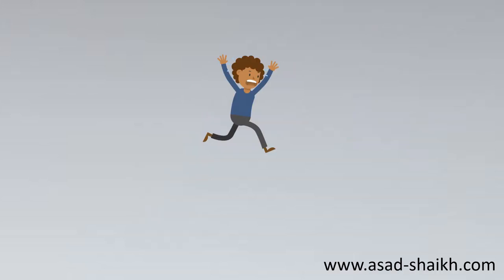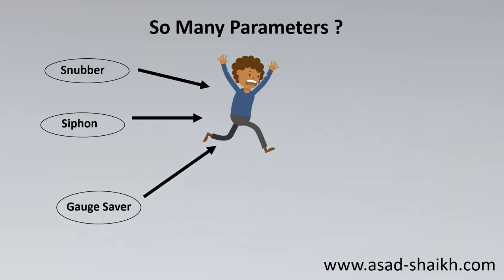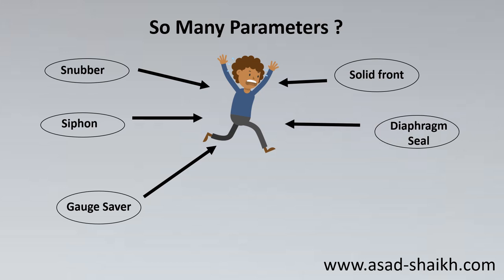When I started with pressure gauges, I realized there are so many parameters to look into. From one side came the snubber, from the other came questions about when to use a siphon — pigtail siphon — and the many different types of siphons available. Then came something called a coiling element, different from a siphon, and then a gate saver — when to use it, when not to. Then came solid front pressure gauges, diaphragm seals, flushing rings, flushing flanges, and blowout direction. All these details came into picture.